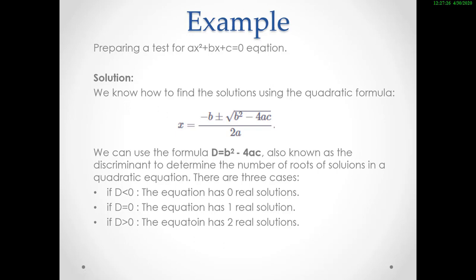For example, if we are asked to prepare a test for this task, this equation can be solved by the quadratic formula, and this formula is called the discriminant formula. D is equal to this equation. Here, if D is greater than 0 then the equation has two solutions; if D is equal to 0 then the equation has only one solution; if D is less than 0 then the equation doesn't have any solution.